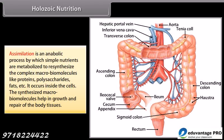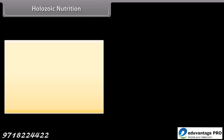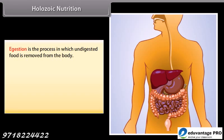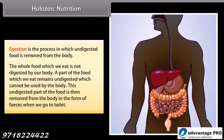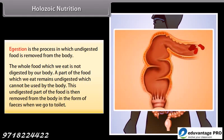The synthesized macro-biomolecules help in growth and repair of the body tissues. Egestion is the process in which undigested food is removed from the body. The whole food which we eat is not digested — a part remains undigested and cannot be used by the body. This undigested part is then removed from the body in the form of feces when we go to the toilet.